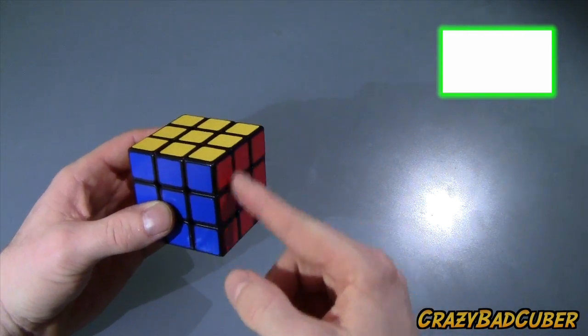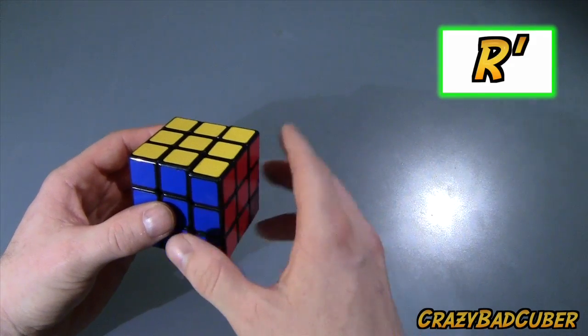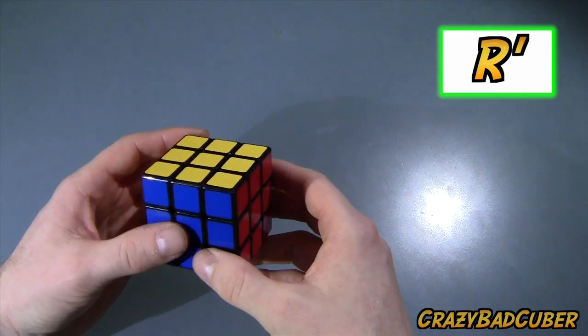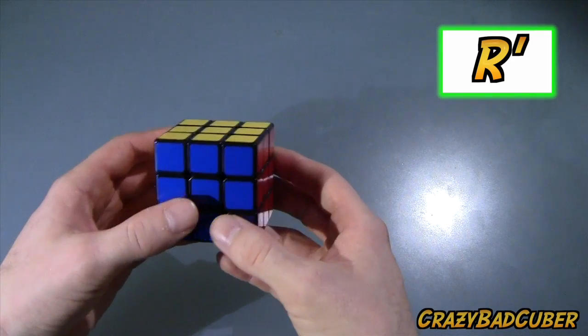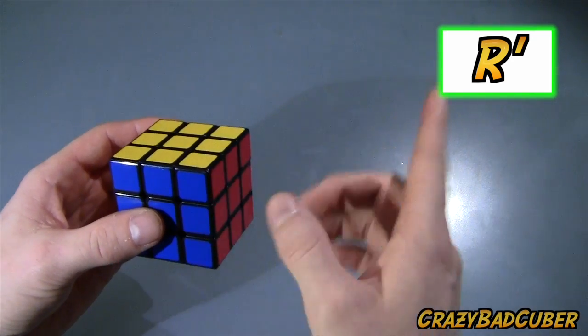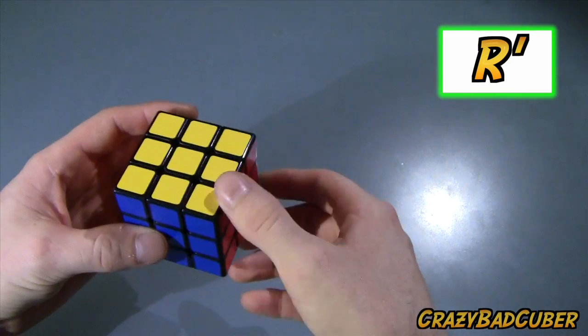Now, when we look at things counterclockwise, we put an R and then a little tick next to it. That means R prime or RI as some people say it. I say it as R prime. That's what I'm going to be using throughout this entire tutorial series. So when you see an R with a little tick next to it, that means counterclockwise. So an R counterclockwise.